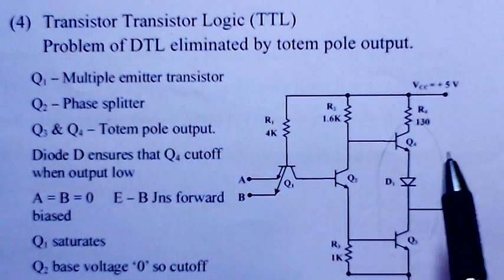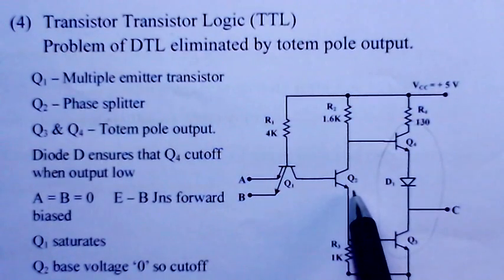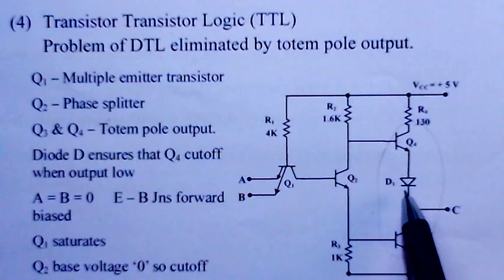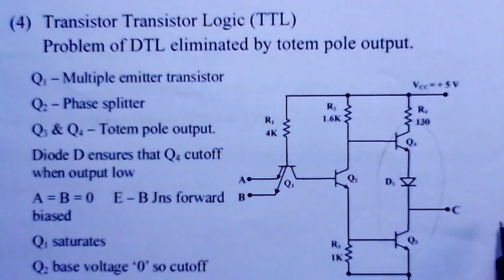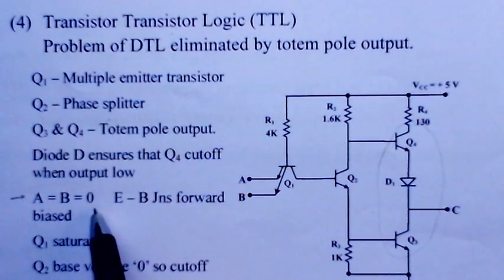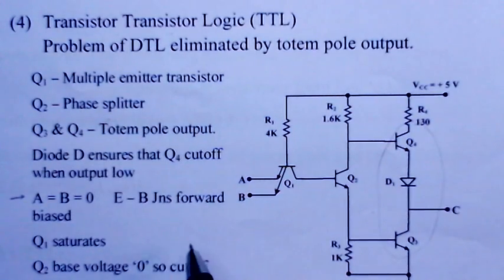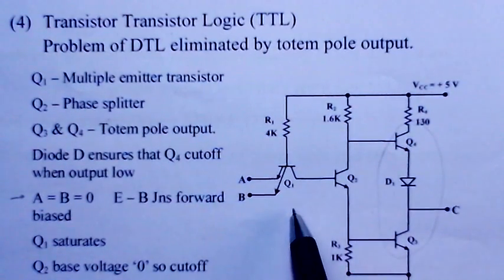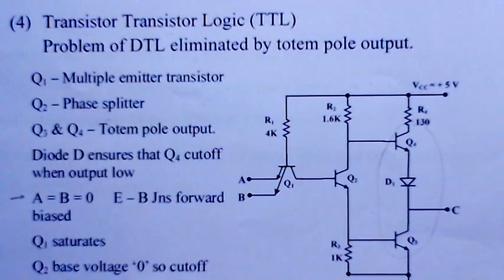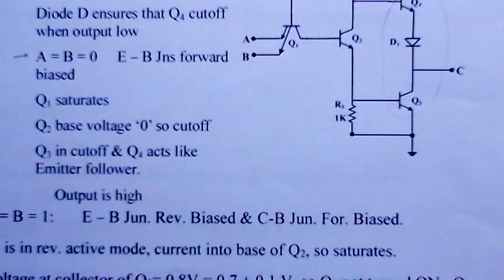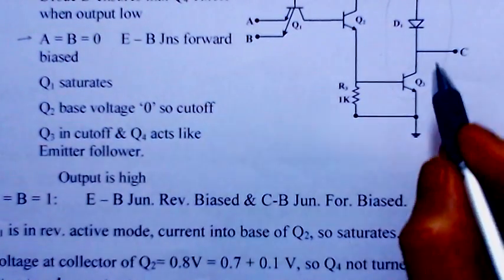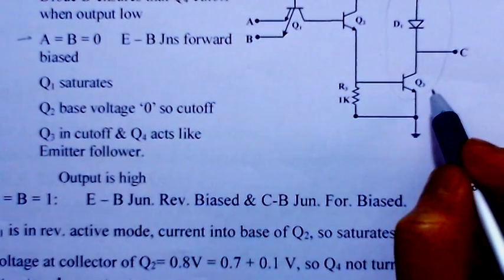In the TTL circuit, Q1 is a multi-emitter transistor, Q2 is a phase splitter, and Q3 and Q4 form the totem pole output. Diode D ensures Q4 remains in cut-off when the output is low. When A = B = 0 (low logic applied), the emitter-base junctions are forward biased, causing Q1 to saturate. This means the voltage at Q2's base is very small, so Q2 is in cut-off, and Q3 is also in cut-off. Q4 then acts as an emitter follower, giving a high output.